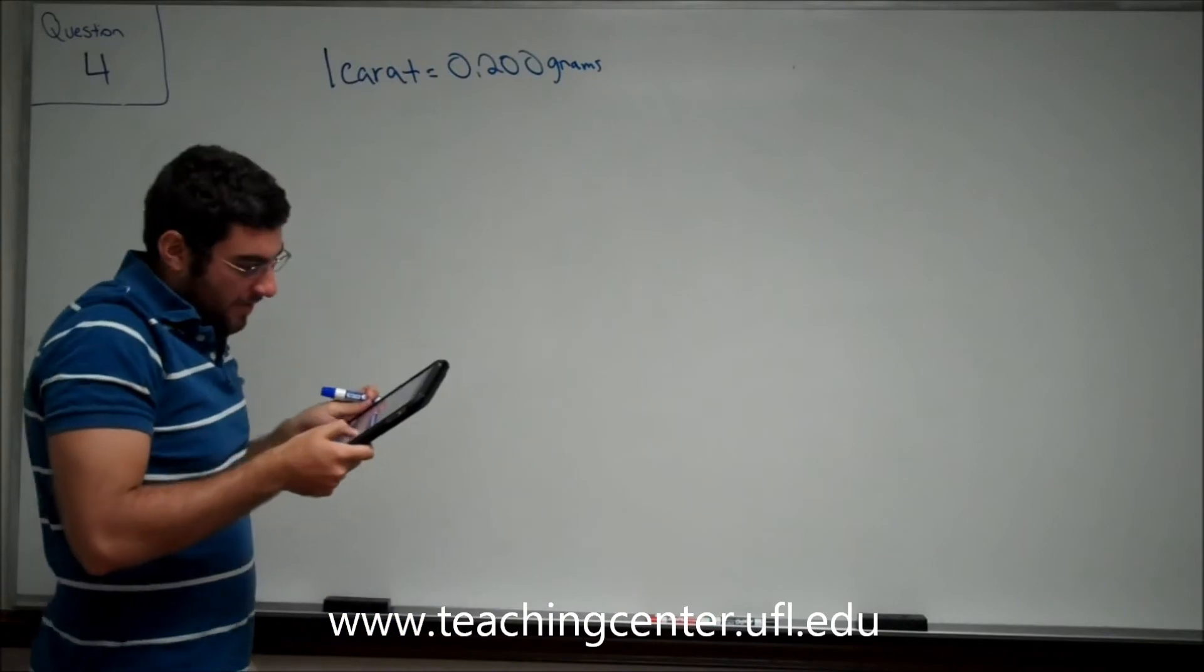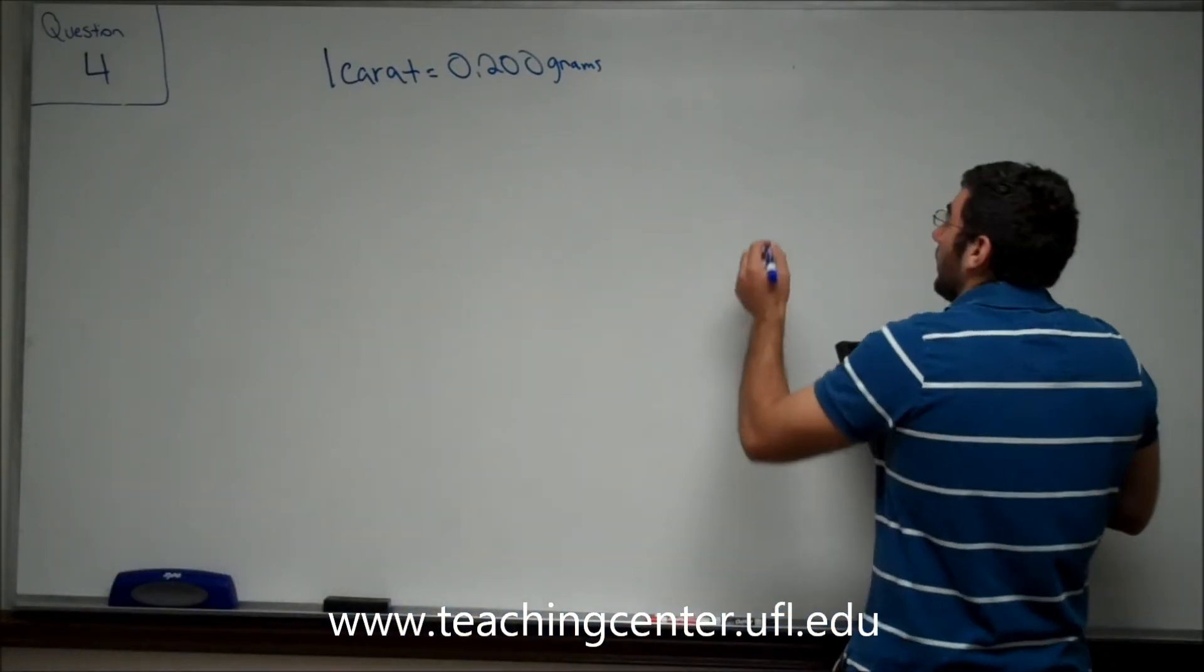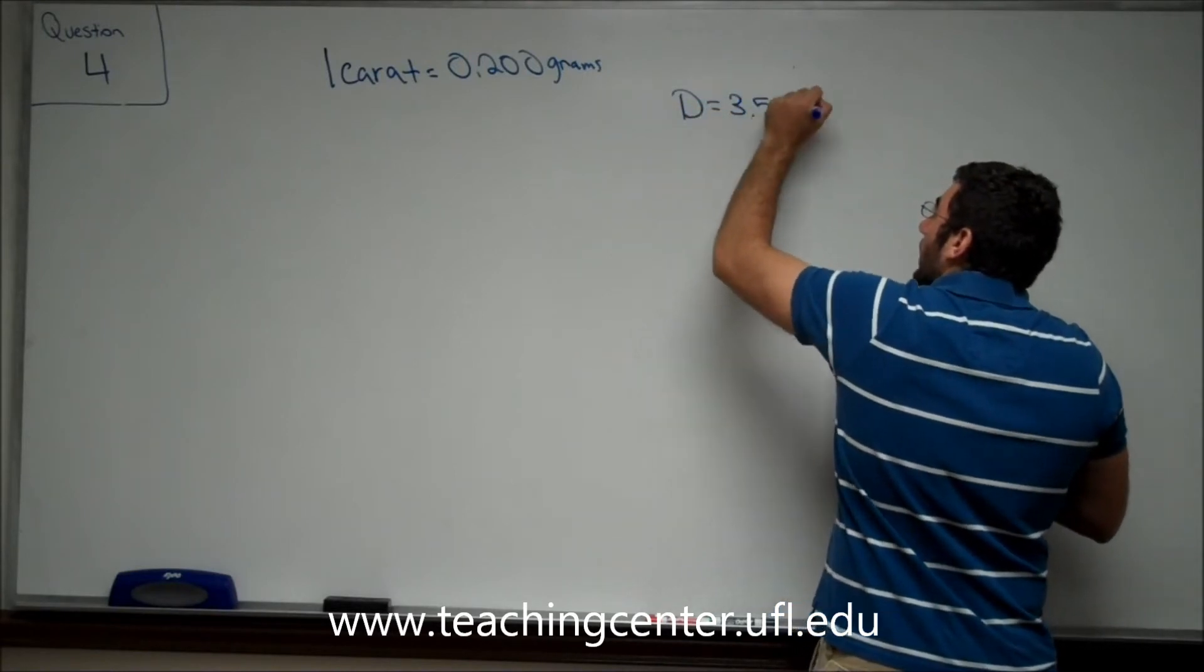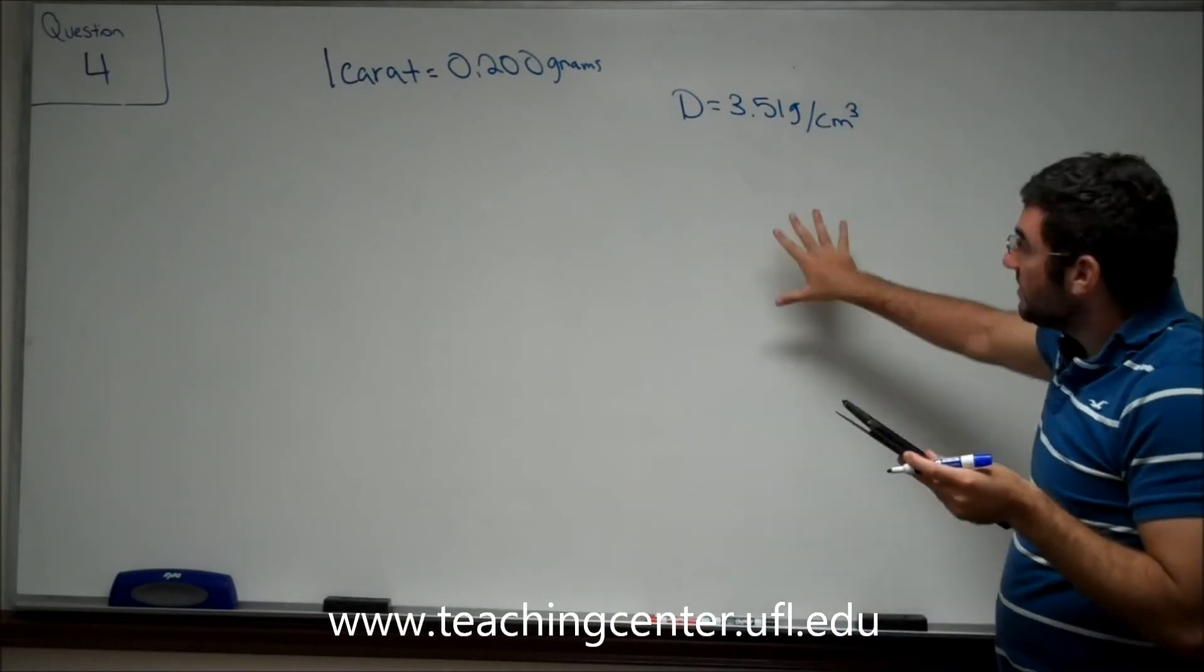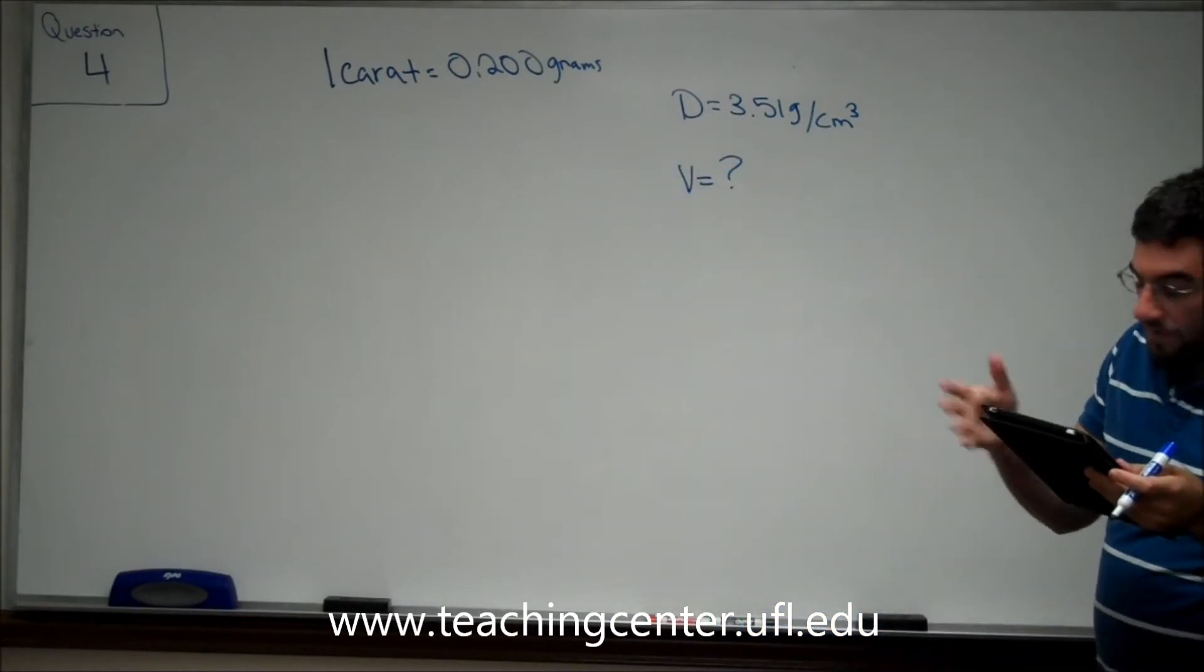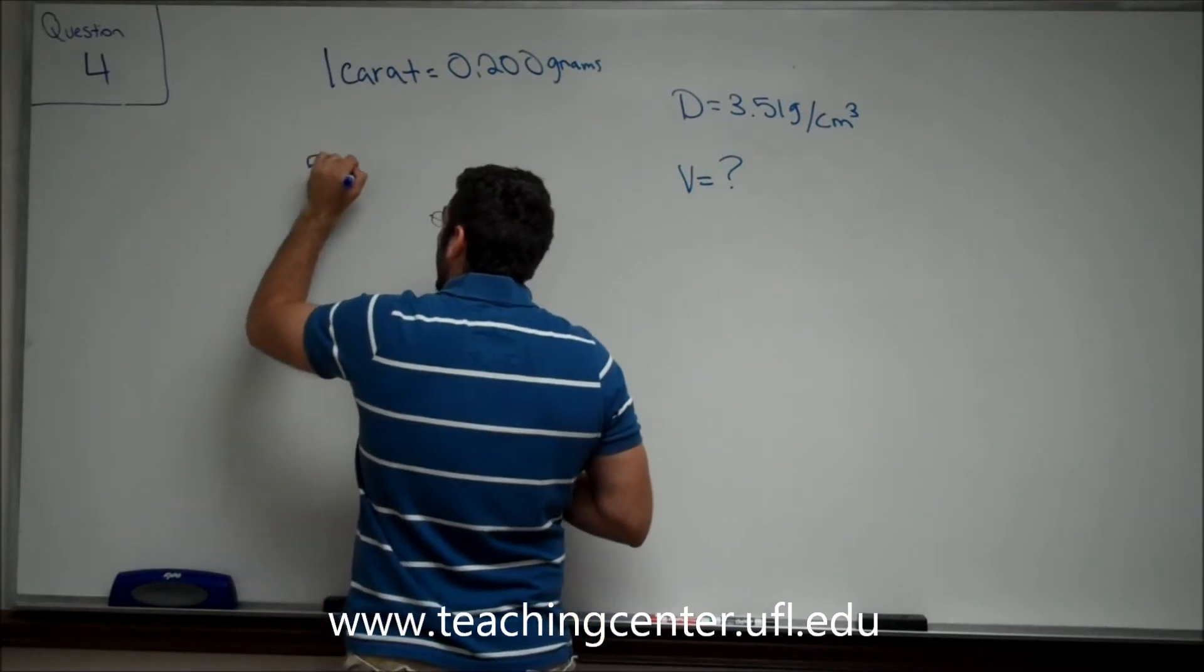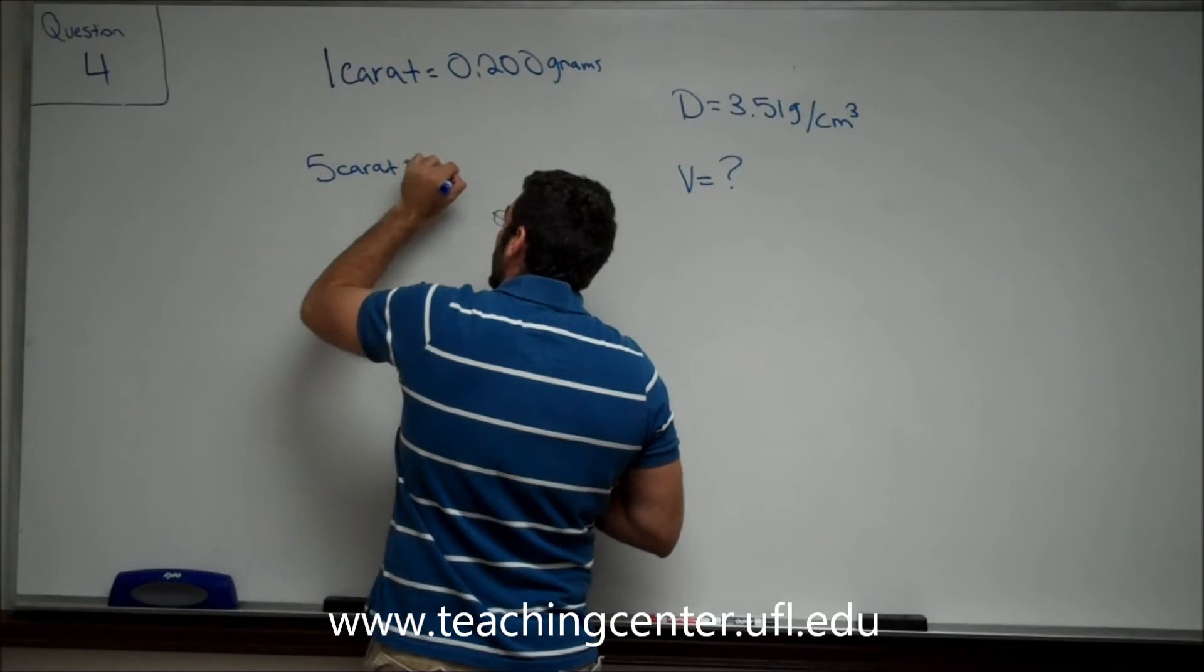The density of a diamond is 3.51, so we'll say density equals 3.51 grams per cubic centimeter. What is the volume, we're looking for a volume here, of a 5 carat diamond. So what we have is, we have a 5 carat diamond, and we want to know what the volume is.